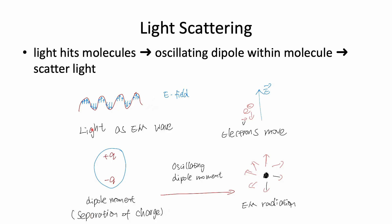The electric field in the light is actually constantly oscillating, so the strength and direction of the e-field is constantly changing. This oscillation in the e-field also causes an oscillation in the dipole moment. When you have an oscillating dipole moment, the particle radiates electromagnetic waves — and this is the scattered light.